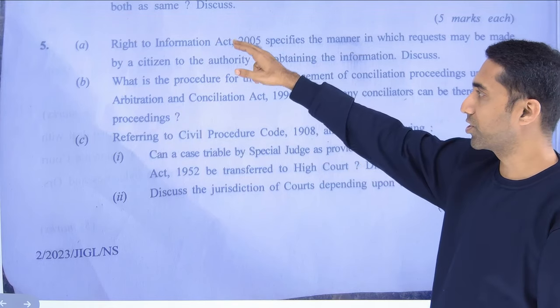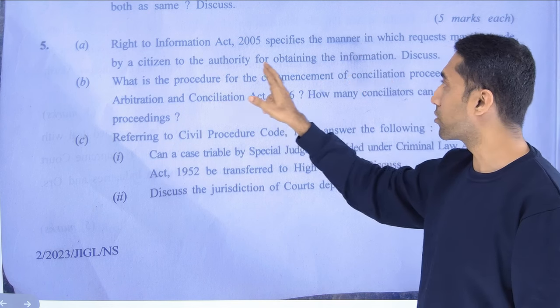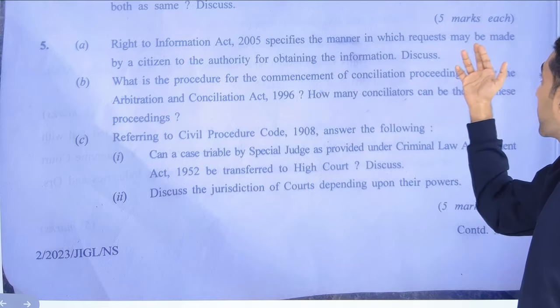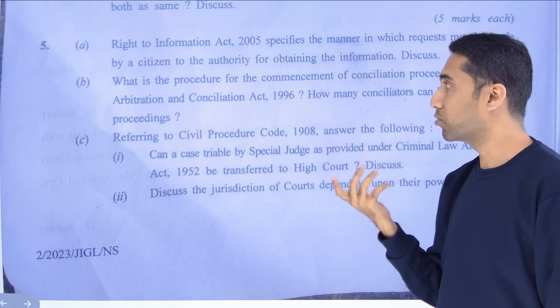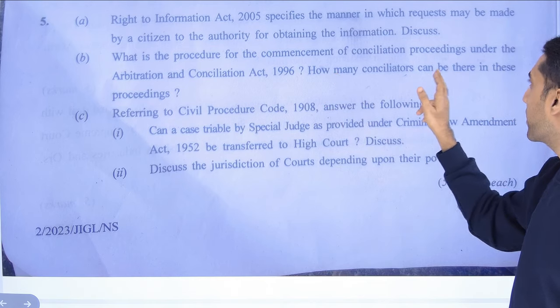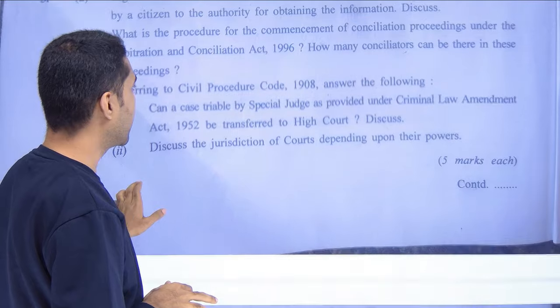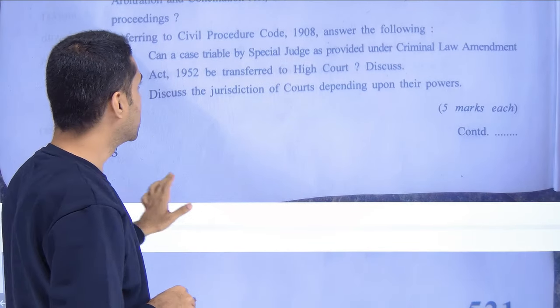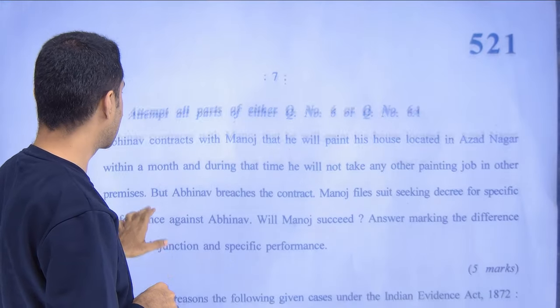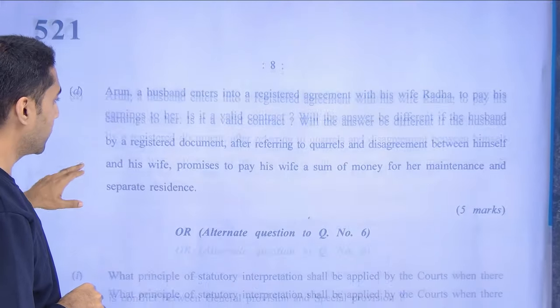They also ask about the Right to Information Act — the RTI Act specifies the manner in which a request may be made by a citizen to an authority for obtaining information. Very simple, very direct. Then they ask about the procedure for commencement of conciliation proceedings under the Arbitration and Conciliation Act, and how many conciliators can be there. Again a direct question — if you have studied the act you can write the answer. There are also pretty direct questions on the CPC, some case law questions and case study questions.